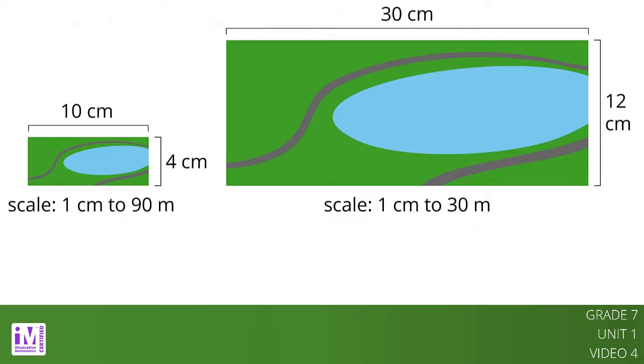Since the length is 3 times as long and the width is 3 times as long, that means the area of the new scale drawing will be 9 times the area of the original drawing because 3 times 3 equals 9.